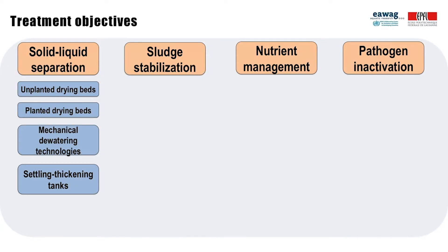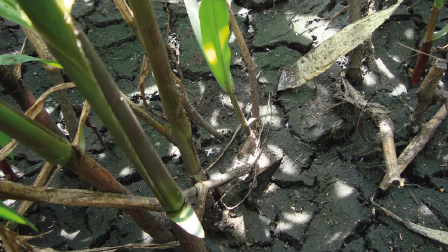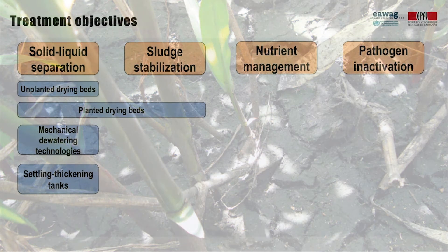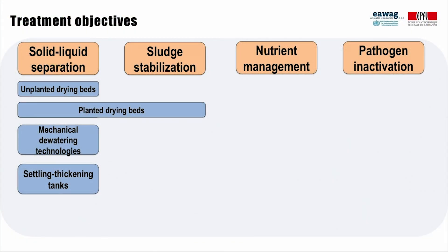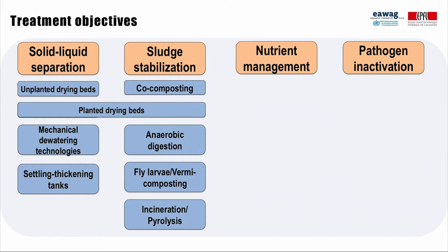Treatment technologies typically achieve several treatment objectives. For example, with planted drying beds, sludge can remain on the surface for up to 10 years and also become stabilized, as you can see with this stabilized sludge on the surface of a planted drying bed. Other treatment technologies for sludge stabilization include co-composting, anaerobic digestion, fly larvae and vermicomposting, and incineration and pyrolysis.